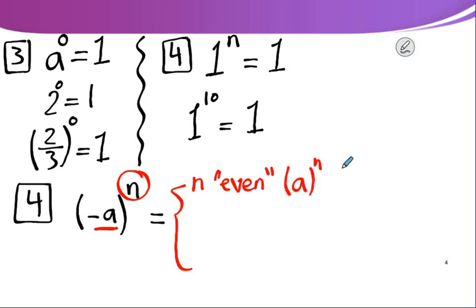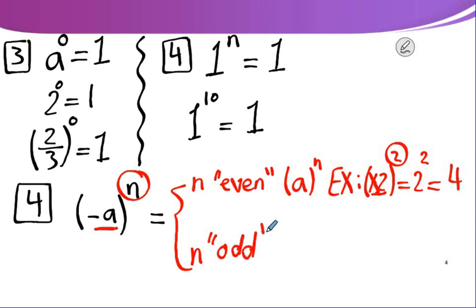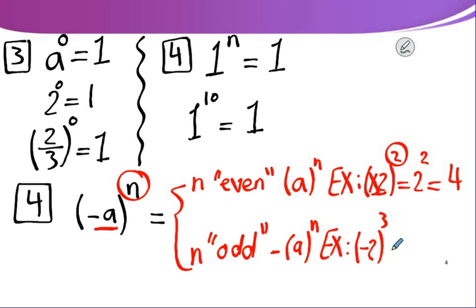For example, negative 2 to the power 2: the base is negative, so look at the power. The power is even, so there is no negative sign — it will be 2 to the power 2 equals 4. If n is an odd number, it will be negative A to the power n. For example, negative 2 to the power 3: the base is negative and the power is odd, so it equals negative 8.